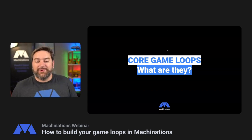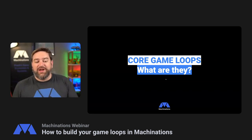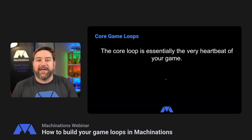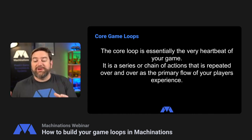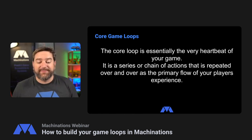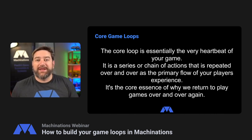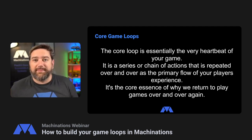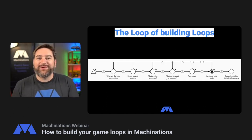So let's talk about core loops and what they are. Core loops really are essentially the very heartbeat of the game. They're the action, the series of chain of actions that is repeated over and over as the primary flow for your player's experience — the core essence of why we return to play the games over and over. We've got a Machinations model — a loop of building loops that we defined as we were prepping for this session.